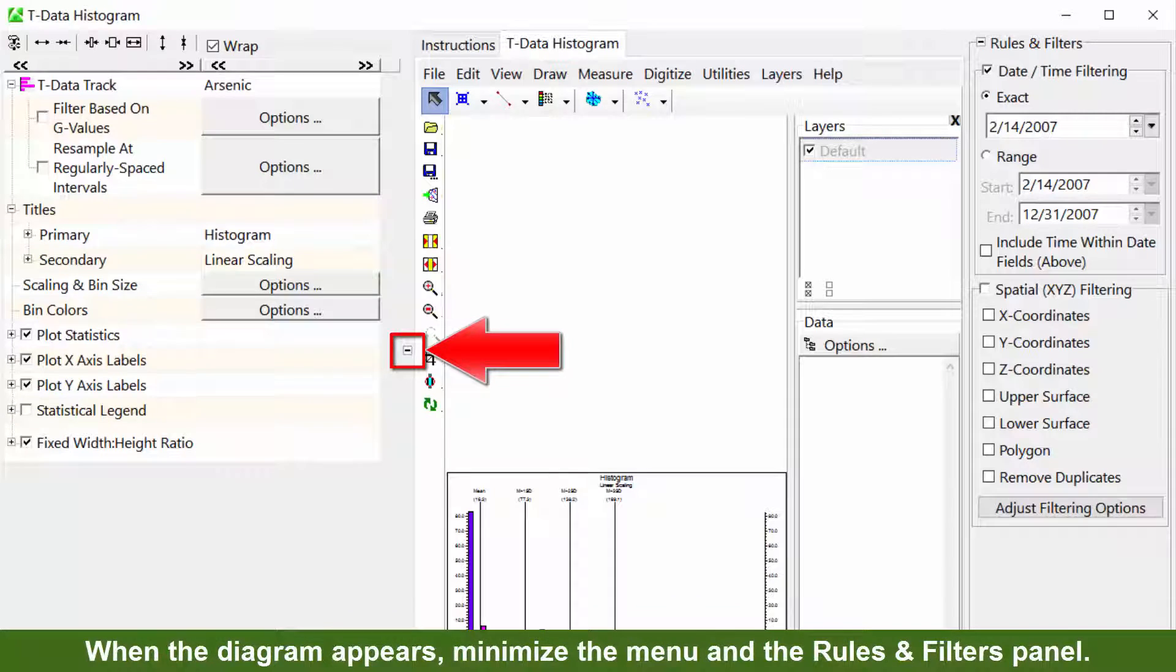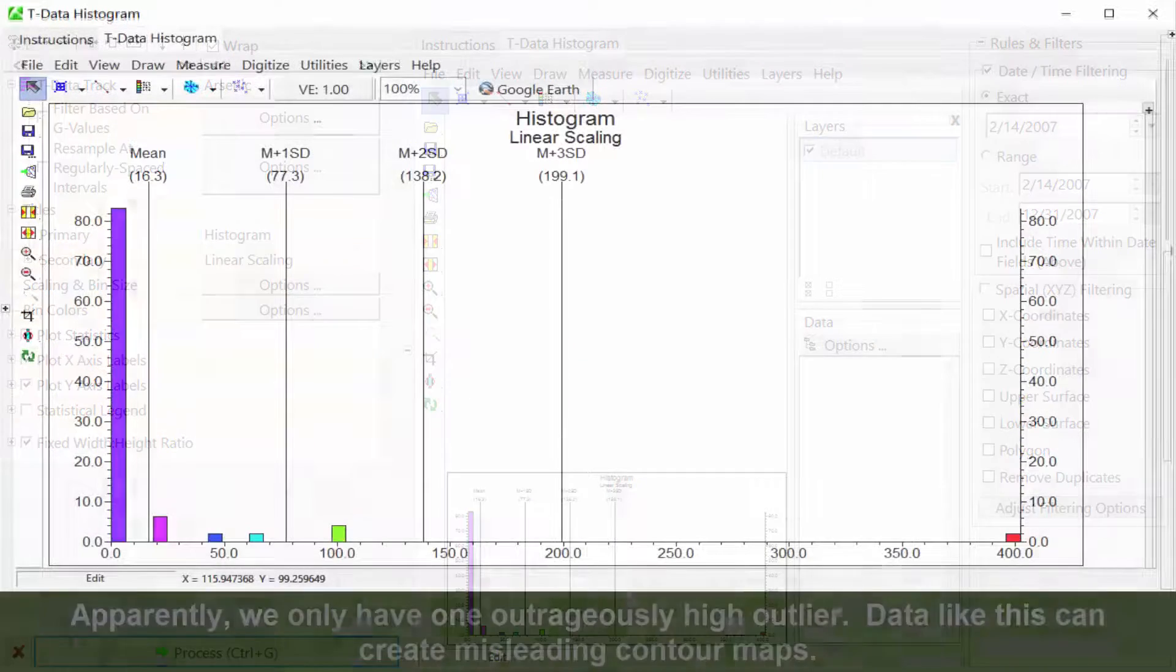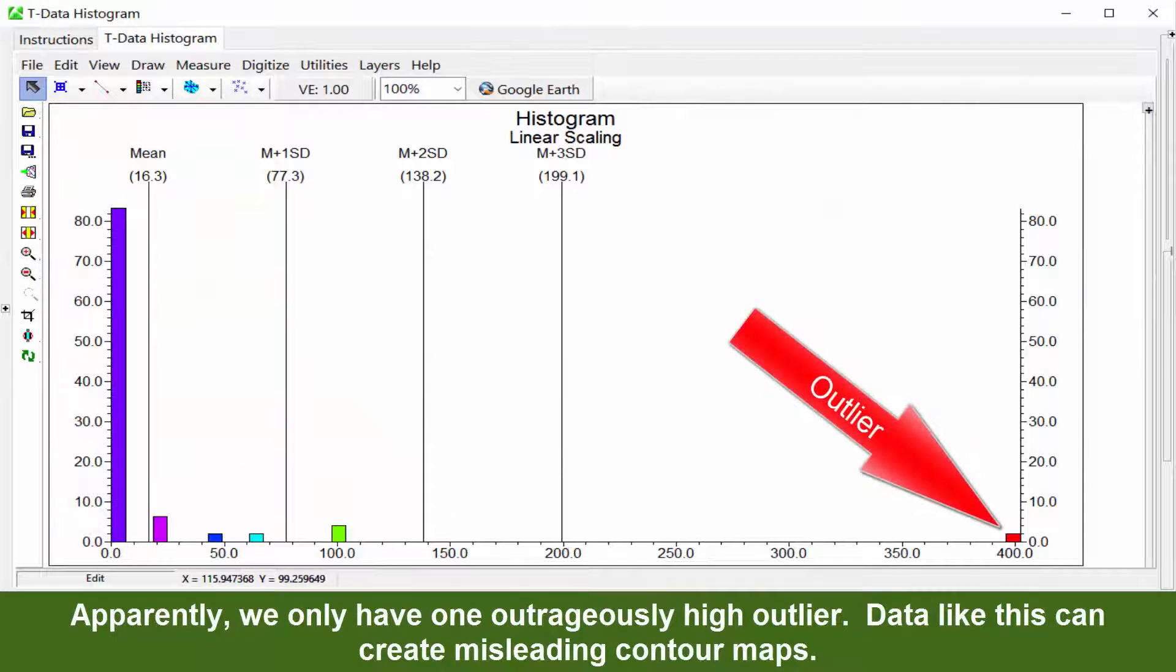When the diagram appears, minimize the menu in the Rules and Filters panel. Apparently, we only have one outrageously high outlier. Data like this can create misleading contour maps.